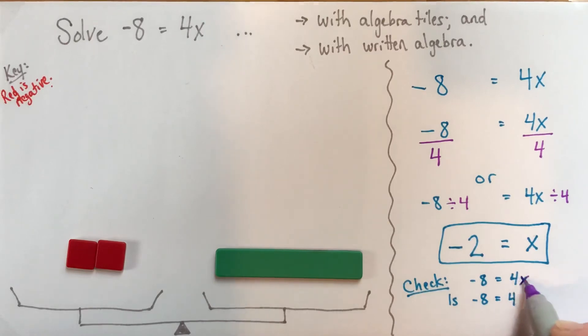We know that this 4x here means 4 times x. So you can write a little times symbol. I don't like to write a little x because I get it mixed up with my variable.